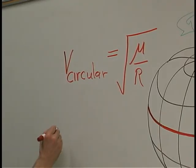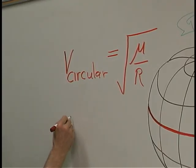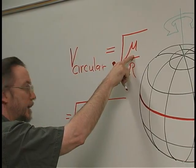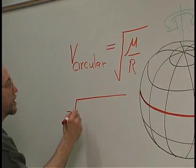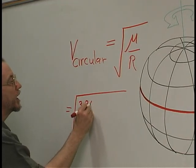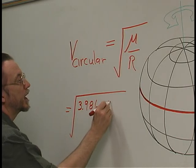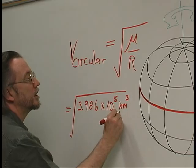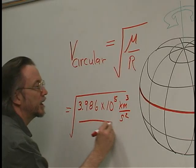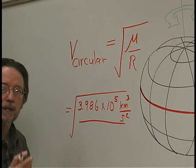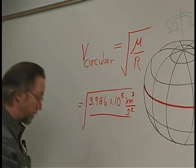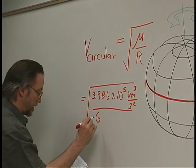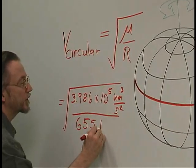If we plug in some numbers to this equation, we have the square root of mu, the planetary constant for the Earth of 3.986 times 10 to the 5th kilometers cubed per second squared. And if I use an altitude of about 176 kilometers for our low Earth orbit, then the total distance from the center of the Earth is about 6,554 kilometers.